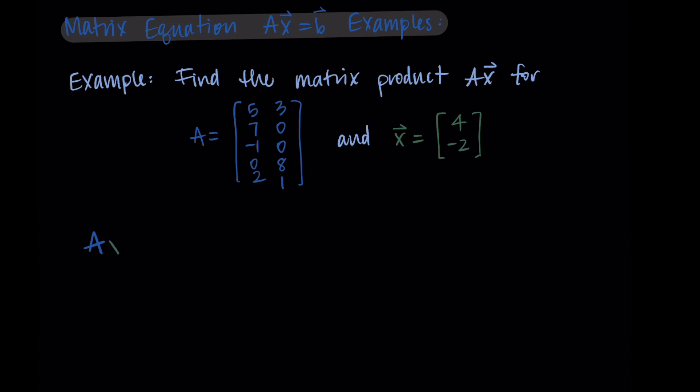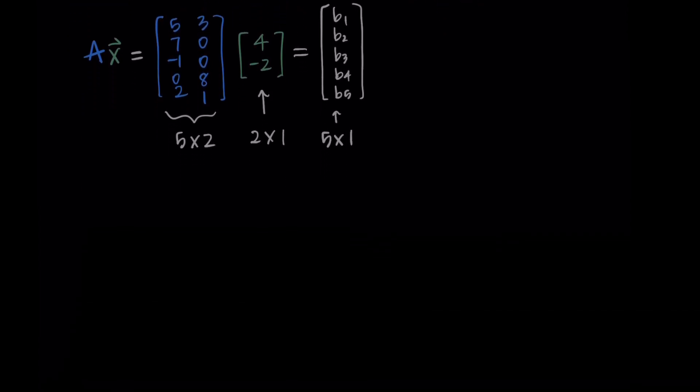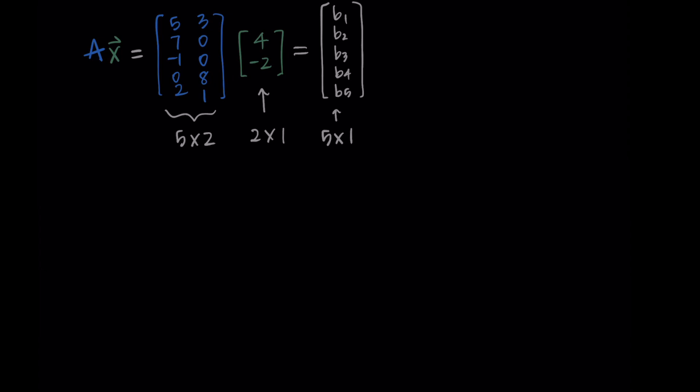Okay so we're doing A times x. We have A which is a 5 by 2 matrix and then x which is a 2 by 1 vector which we're looking at as a matrix. So when we do this multiplication our resulting vector is going to have five components so it's going to be a 5 by 1 matrix. So we have those inner dimensions are the same and the resulting vector is 5 by 1. I like to remember that we have one value in the x vector for each column of A so that's why we have two values in our x vector one for each column of A.